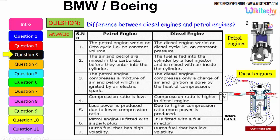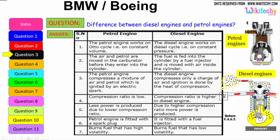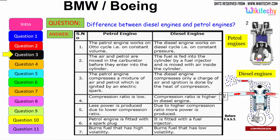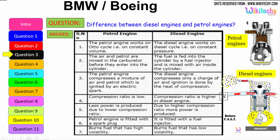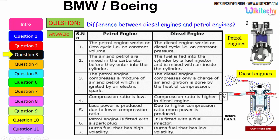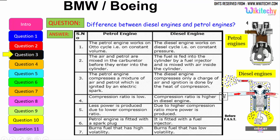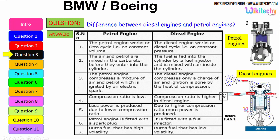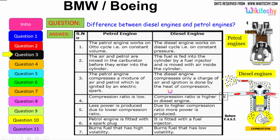The petrol engine burns fuel with high volatility — petrol is highly volatile. The diesel engine can burn low volatility liquid as well; diesel is a low volatile liquid. These are some of the key differences between the petrol engine and the diesel engine.